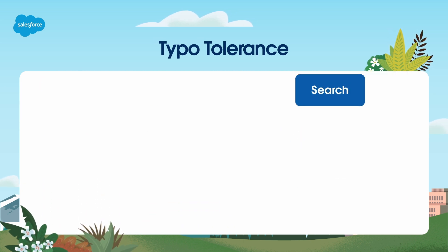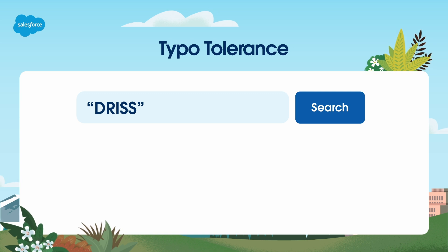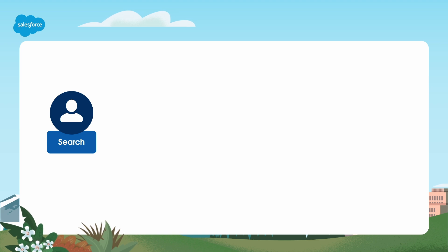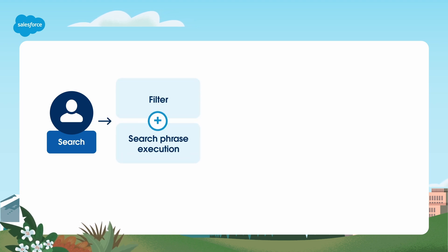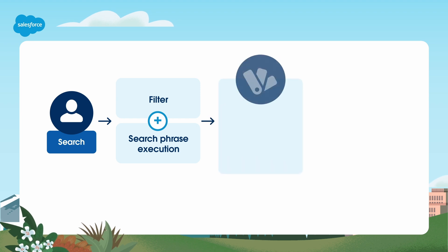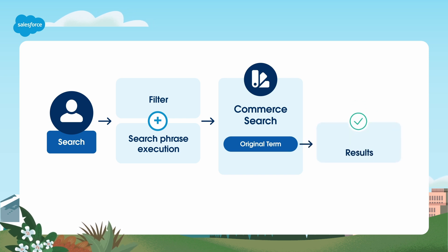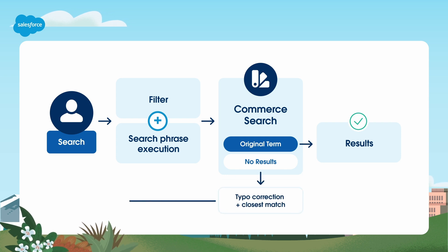Here's an example. Suppose a buyer mistypes "dress" in the search bar of an online clothing retailer. Typo tolerance can suggest the correct search term to help the buyer find the product they are looking for. When a buyer begins a search in your B2B store, the initial filter and search phrase execution happens at the same time. Commerce Search then decides if the term already exists in the catalog. If it finds the original search term, it returns the results. If no results are found, commerce search initiates typo correction, finds the closest match, runs the search again, and returns any results.